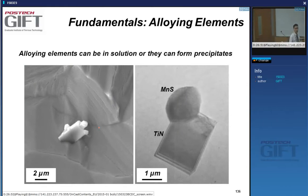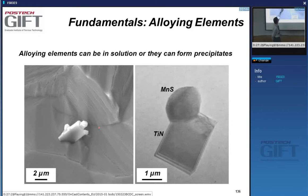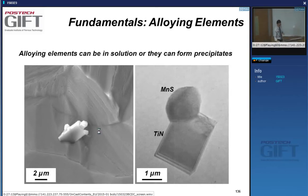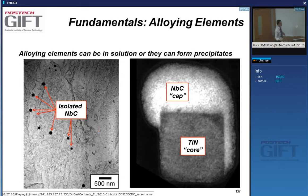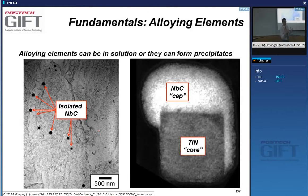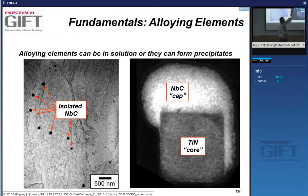Here you see a titanium nitride precipitate, and something has grown on it — manganese sulfide has formed in this case. These precipitates can be very tiny, like these niobium carbide precipitates. At very high magnification you can see a tiny titanium nitride precipitate with a cap-like niobium carbide that has precipitated on top of it, using the titanium nitride as a heterogeneous nucleation site.